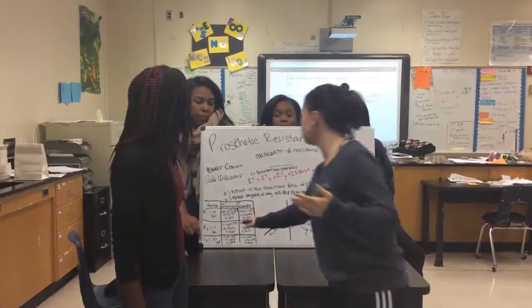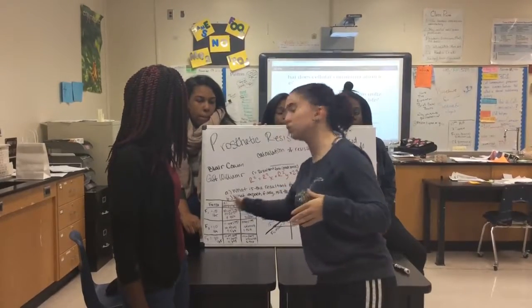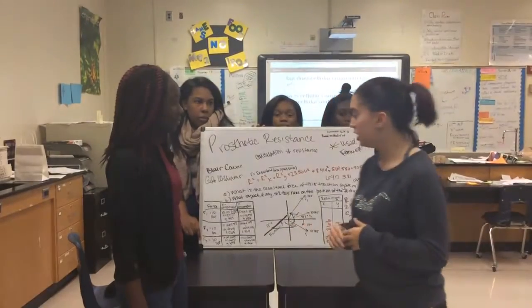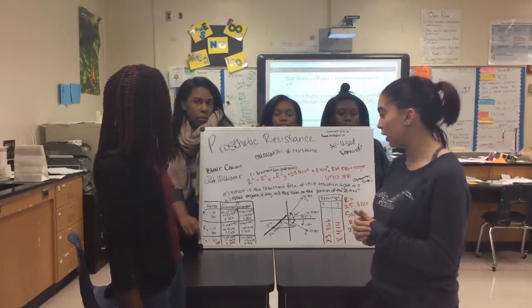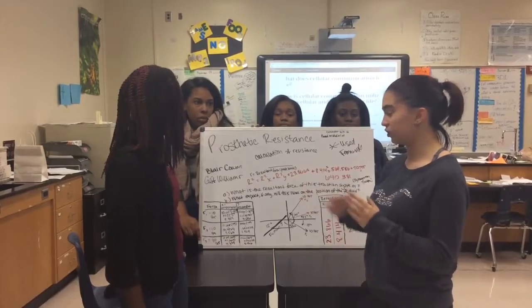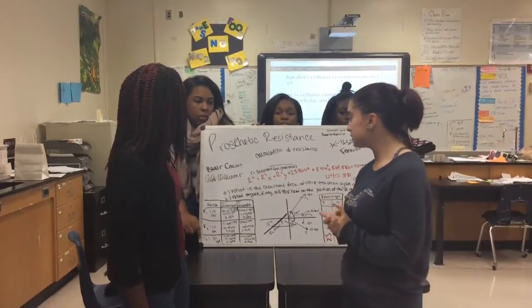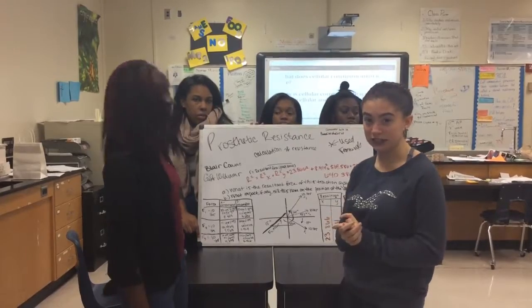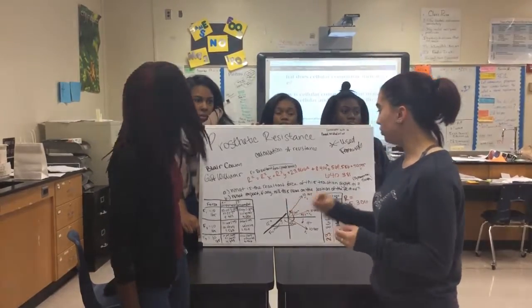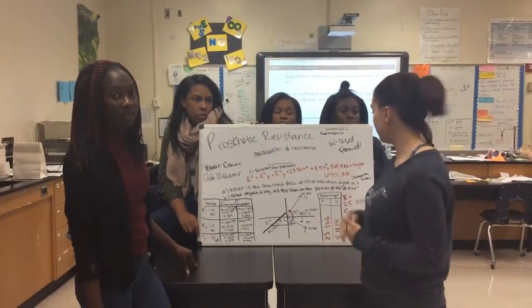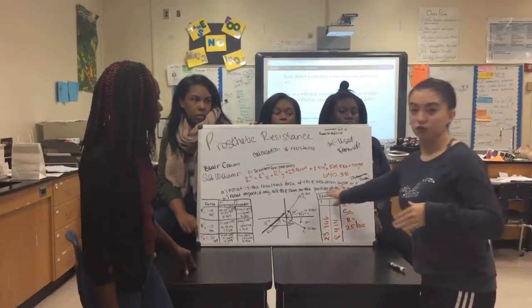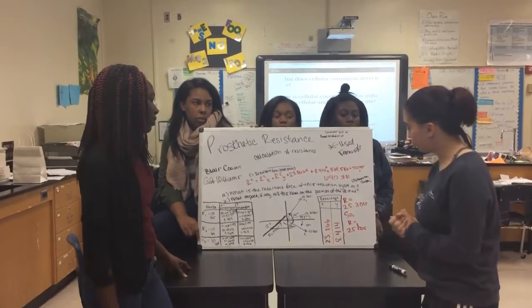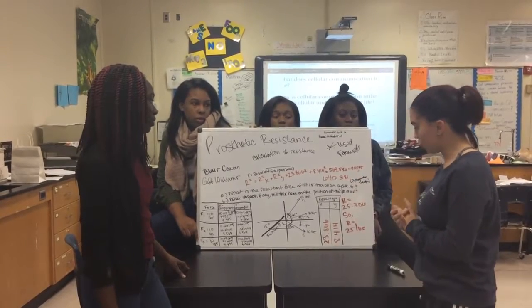So what we did was we got the result of 10 cosine of negative 19 degrees, which was 0.9455, and when you work that all out you get 9.455. And then for force number one, we got 10 sine of negative 19 degrees, which worked out to 3.256. We calculated all of these and added all the results up to a sum of 23.866 for X, and 8.414 for Y.